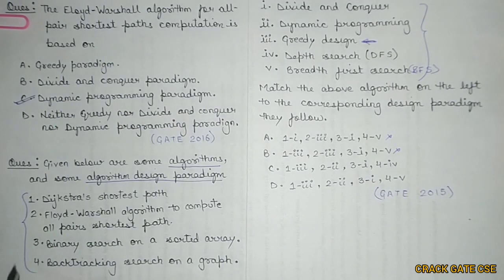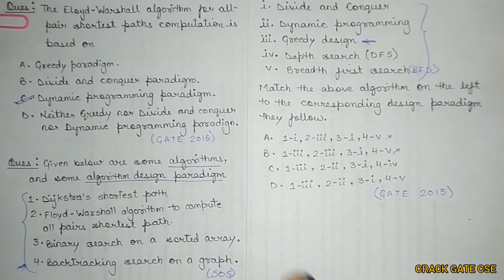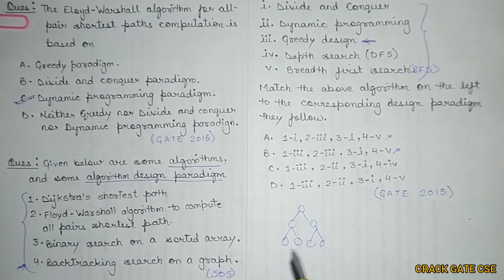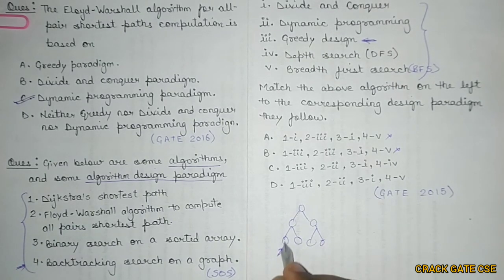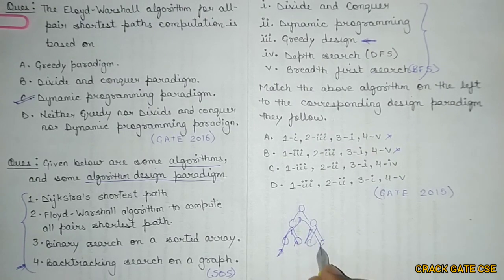For this backtracking search on a graph, you might have remembered that we discussed the sum of subset problem. In sum of subset problem, we had a subset and were trying to search the sum from that particular problem. I explained that using a tree: whenever we were going like this, first we solve this, then we backtrack and come here, then we backtrack and come here, then we backtrack and come here.